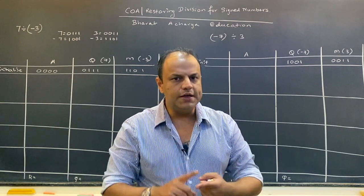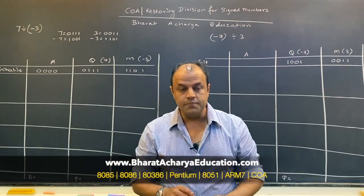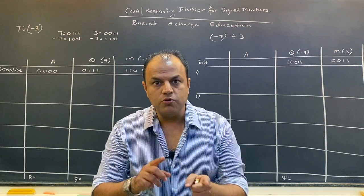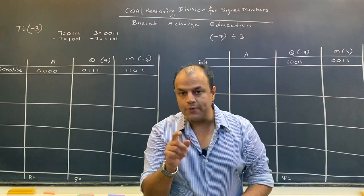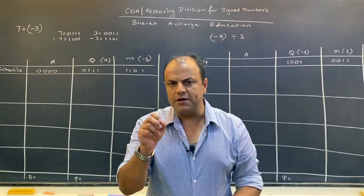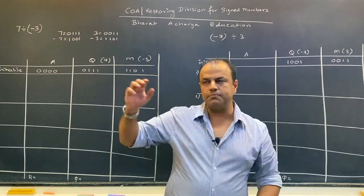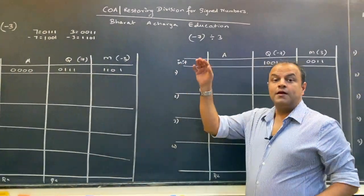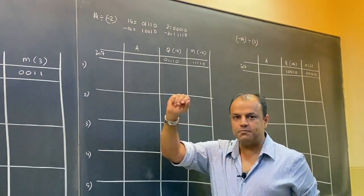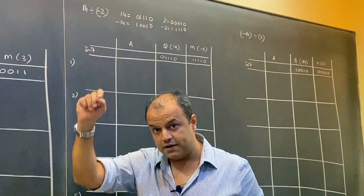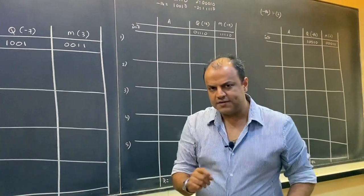This is a continuation of restoring division with a few tweaks to the original algorithm. You need to understand how to handle the dividend — your picture of the dividend will become more clear. You need to understand how to determine whether a step is successful or not; it's a little tricky, so we're going to go very slow on it. I've taken lots of examples: first we're going to do 7 divided by minus 3, then minus 7 divided by 3, then 14 divided by minus 2.